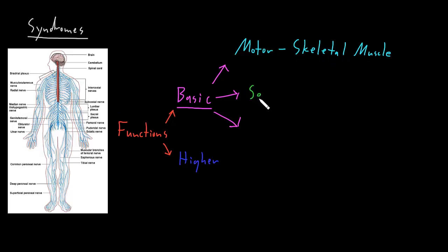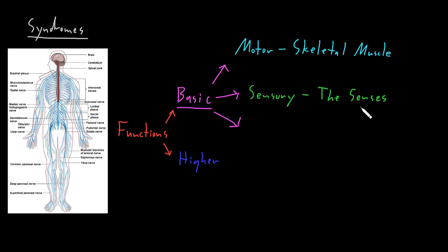The next big category of basic functions I call sensory functions. This involves all of the senses — basically anything that the nervous system can detect. While we're used to hearing about five senses, if you split them into finer categories there are many more: vision, hearing, smell, taste, the vestibular sense from the inner ear, and somatosensation, which includes touch, position of body parts, vibration, pain, temperature, and several others.